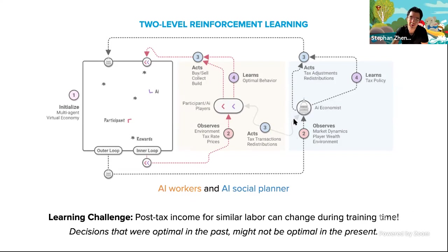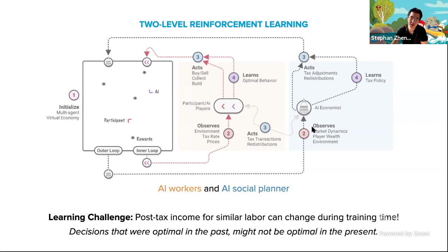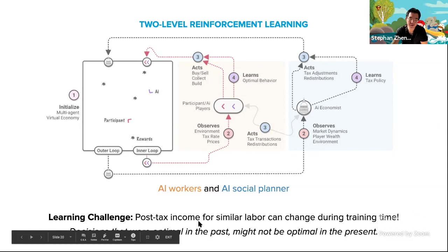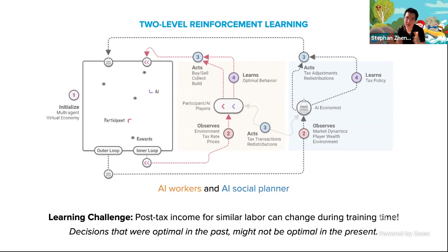This is a pretty big machine learning challenge because as the reward functions change, the optimal behavior under that reward function also changes. In economic terms, if you work 40 hours a week and made some money, then as taxes change the next year, that same amount of work gives you less or more money. The reason the learning challenge is an issue is that there's this constant back and forth between the social planner and the agents as they try to adapt to each other.